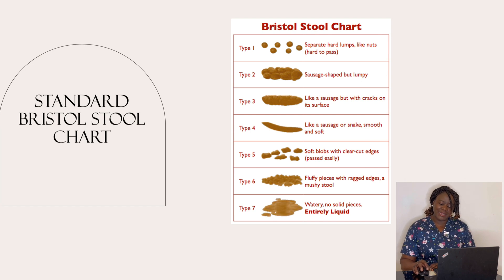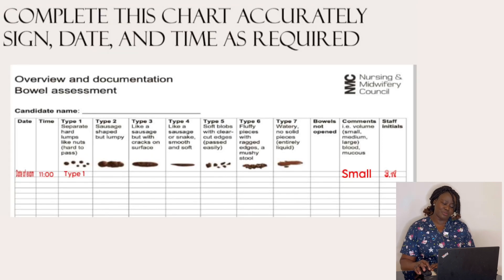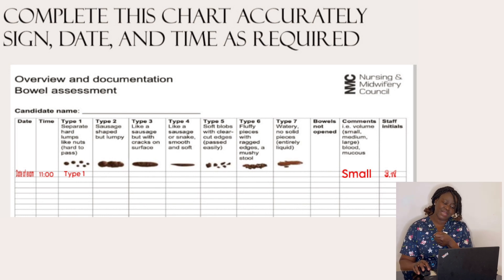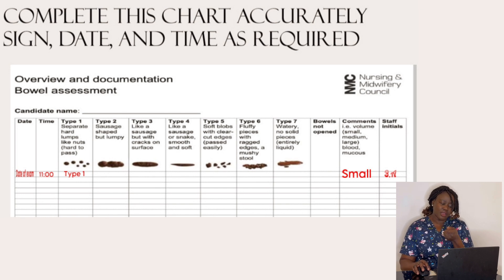You'll be provided with a candidate chart as well, covering the overview and documentation for the bowel assessment. Make sure you write your name, the date of your exam, and the time — for this scenario it says 11 hours, so put 11:00. For the stool type, I've identified type one, so I can tick or write 'type one' under the type one column.